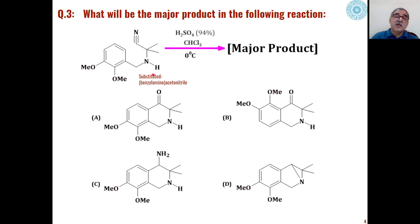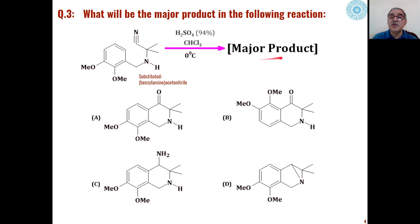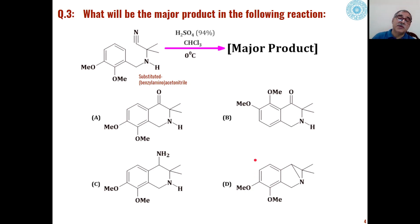Similarly, these types of substituted benzyl-aminoacetonitriles under acid conditions at low temperature in presence of chloroform gave us different types of products as major product. Out of those products, the major product formed is any one of these four choices, and we will see how that major product is formed during the transformation of this substrate into the product.